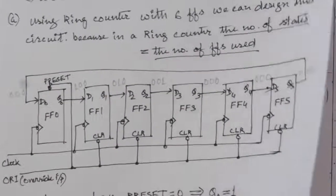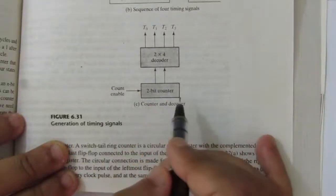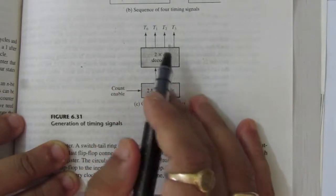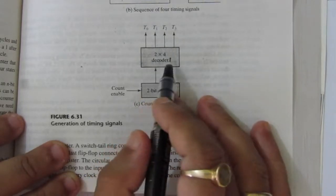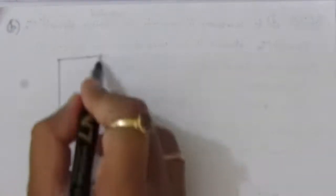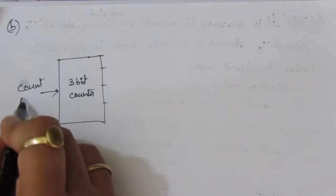This is the solution of the first part of the problem. In the second part, we can use a counter and a decoder. In the reference figure, the circuit uses a counter and decoder but with only 4 outputs from a 2x4 decoder. For 6 timing signals, we need to use a 3-bit counter.